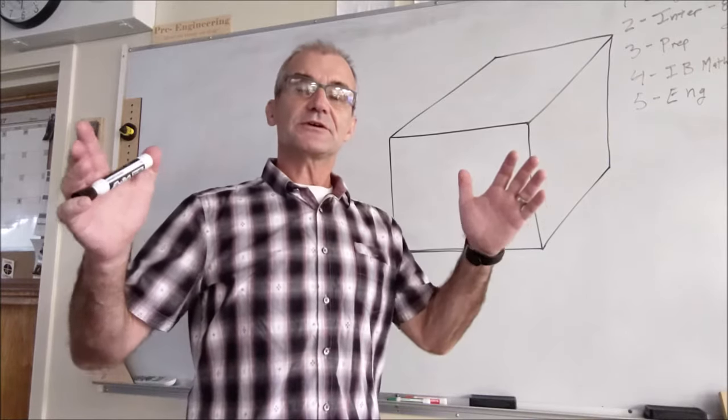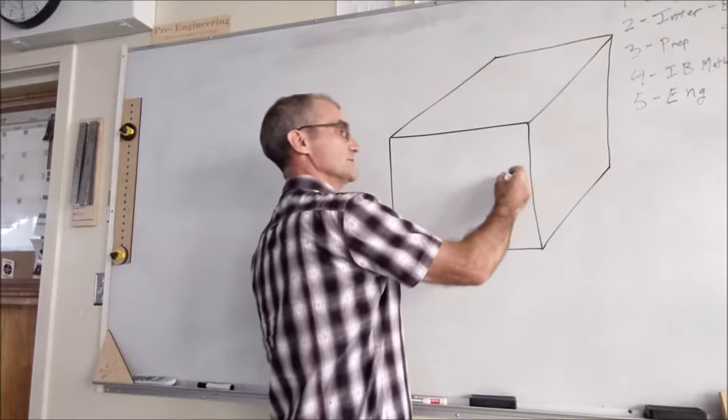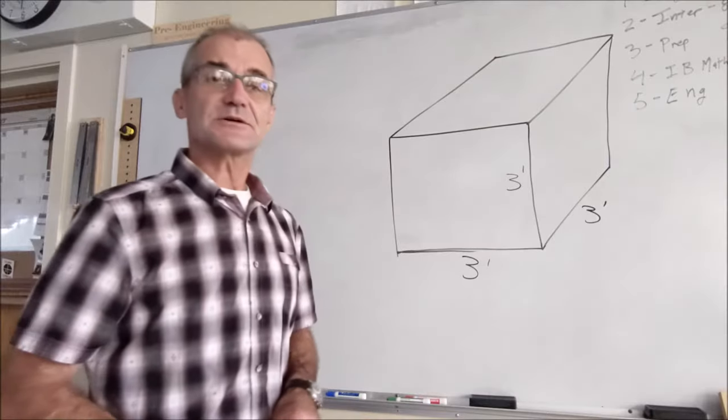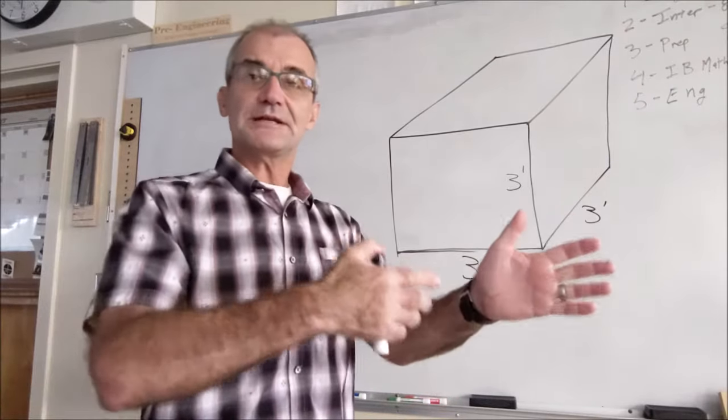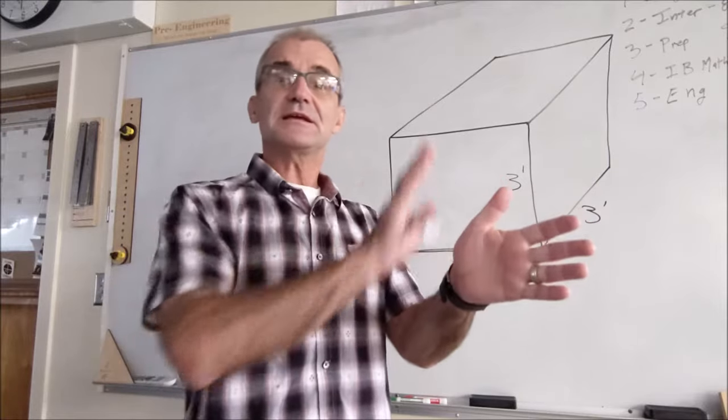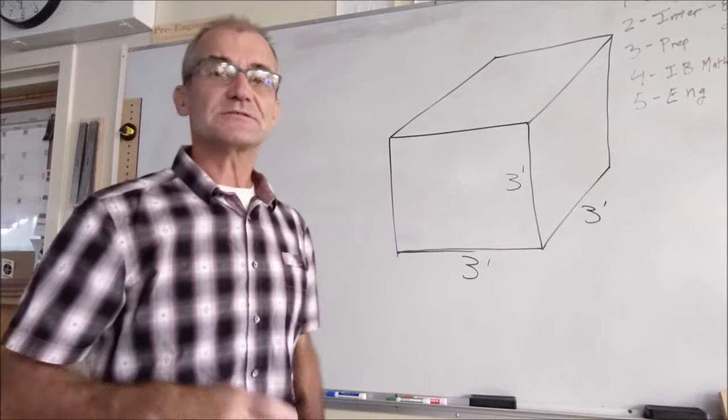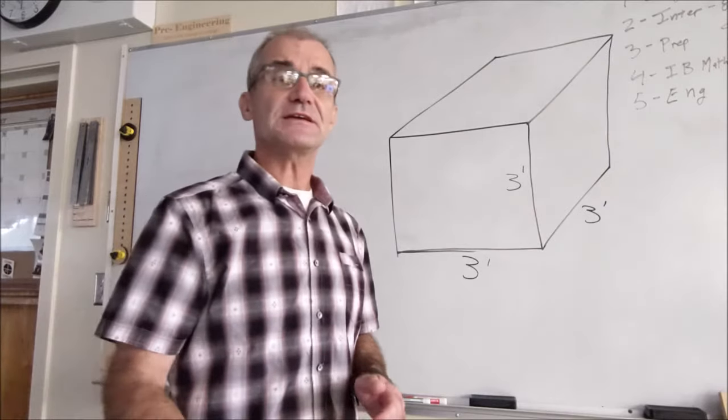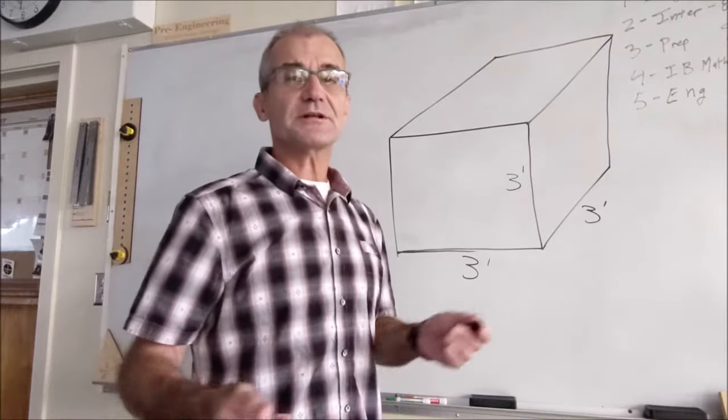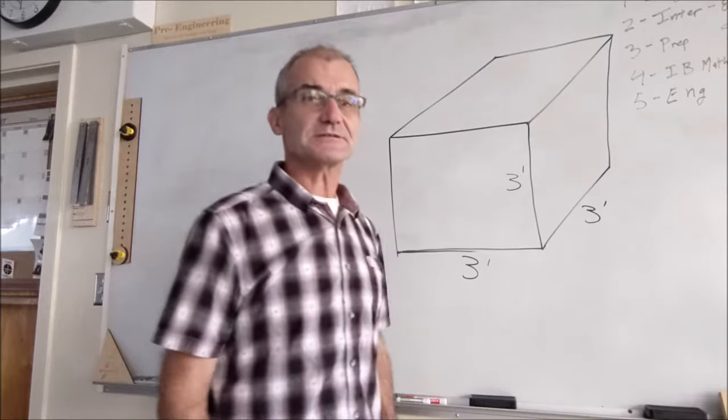A yard is three feet. So a square yard would be three by three, nine, but a cubic yard would be three by three by three going up. Three times three, nine times three, twenty-seven. So there are twenty-seven cubic feet in one cubic yard. A cubic yard is pretty close to a cubic meter if you're working in Europe or somewhere else.